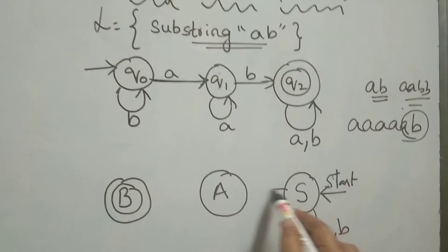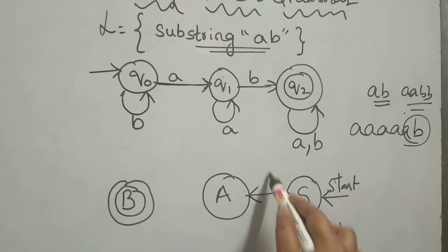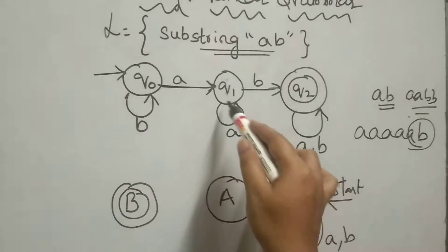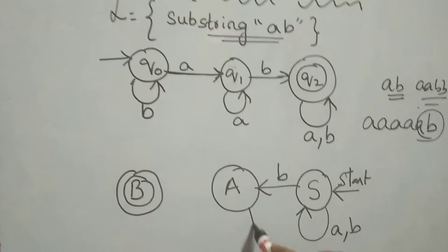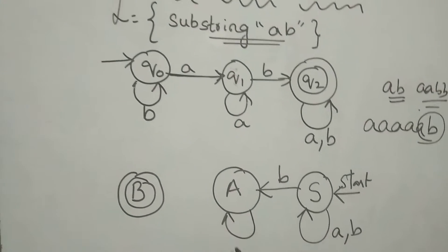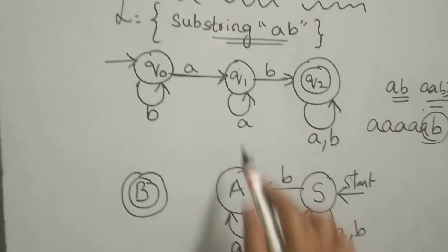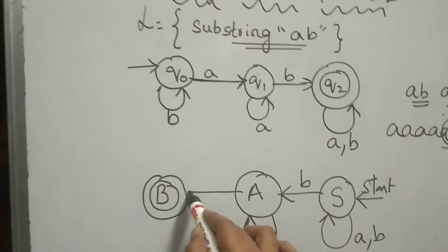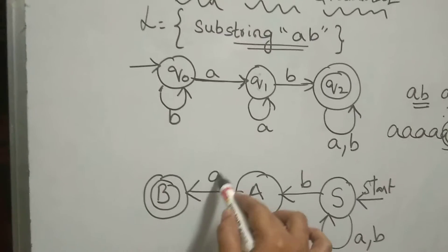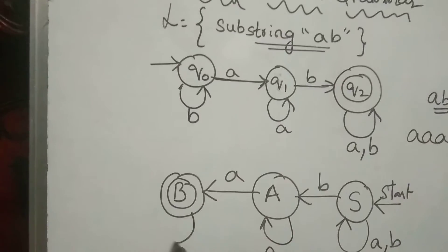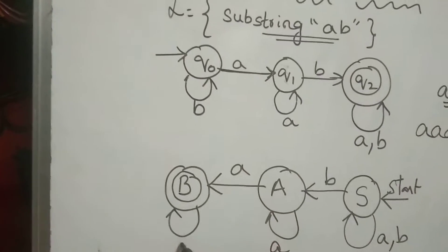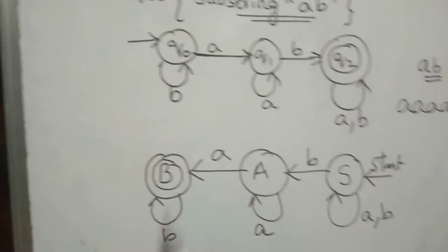This transition is 'b'. Next is 'a'. Next is 'a'. Next is 'b'. This is the reversed state.